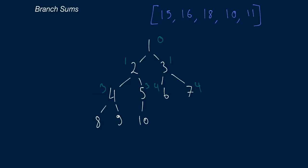We call the function recursively on all four of those child nodes with running sums 3, 3, 4, and 4. The 3 comes from adding 2 plus the running sum of 1 from the root node, and the 4 comes from adding 3 plus that same running sum of 1. With node 4 having two children, we add 4 to the running sum of 3, passing 7 to those two nodes. At node 5, we pass 3 plus 5, which is 8.